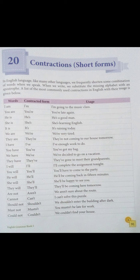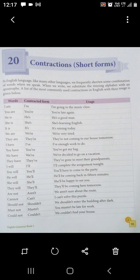In English grammar, like many other languages, we frequently shorten some combination of words when we speak. When we write, we substitute the missing alphabet with an apostrophe. A list of most commonly used contractions in English with their usage is given below.